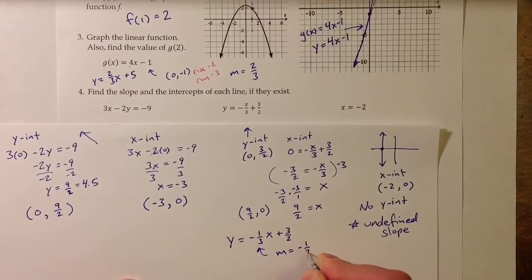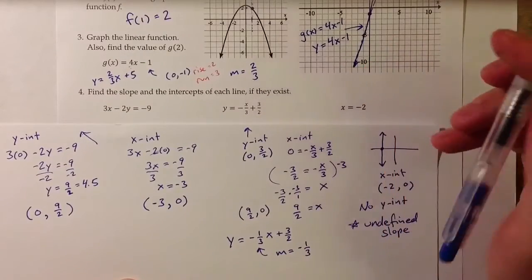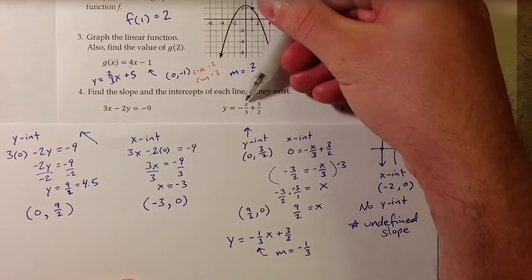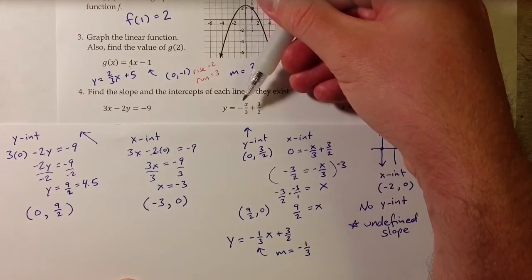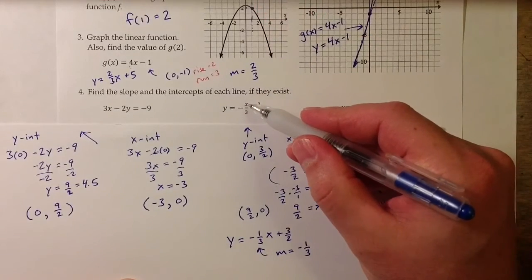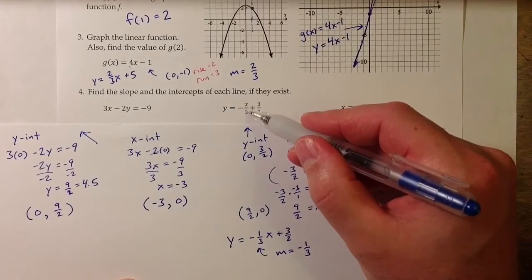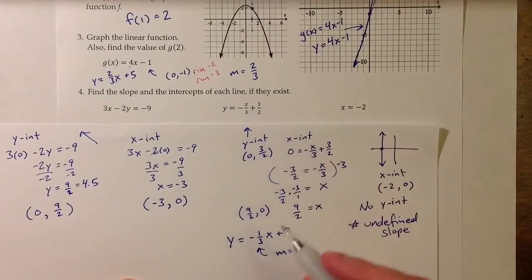The 1 comes from the fact that a variable with no number in front of it could have a 1 placed in front. So 1 times x divided by negative 3 is the same as negative 1 divided by 3 times x. So negative 1 third is the appropriate slope.